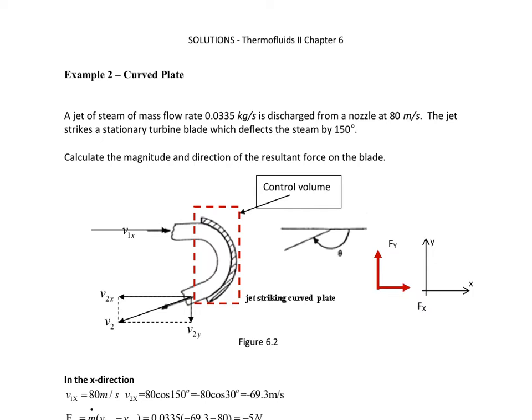As you have seen, we draw on the control volume. You are told this is a jet of steam, mass flow rate 0.035 kilograms per second, discharges from a nozzle at 80 meters per second. Jet strikes a stationary turbine blade which deflects the steam by 150 degrees.